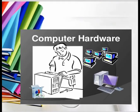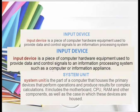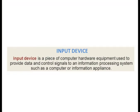Computer hardware components are further divided into three groups: input devices, output devices, and the system unit. An input device is a piece of computer hardware equipment used to provide data and control signals to an information processing unit such as a computer or information applications.